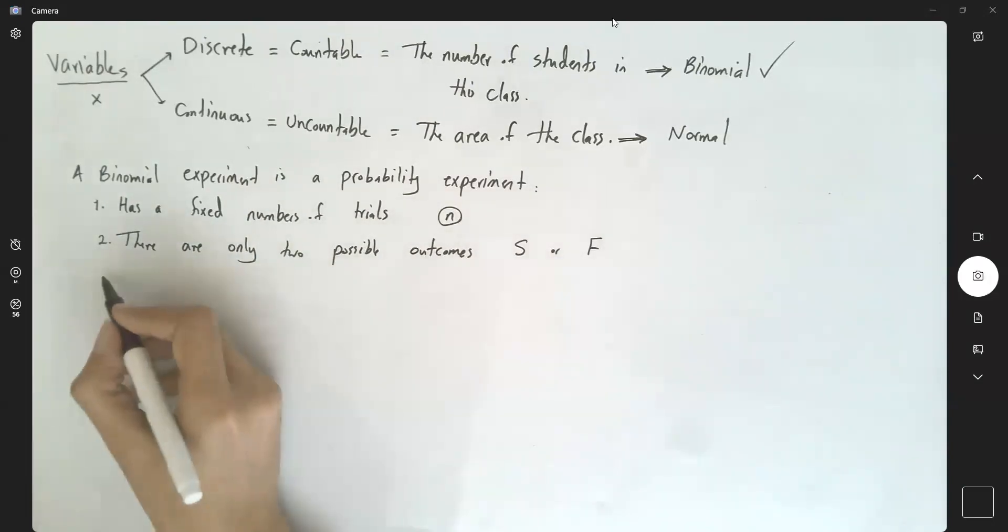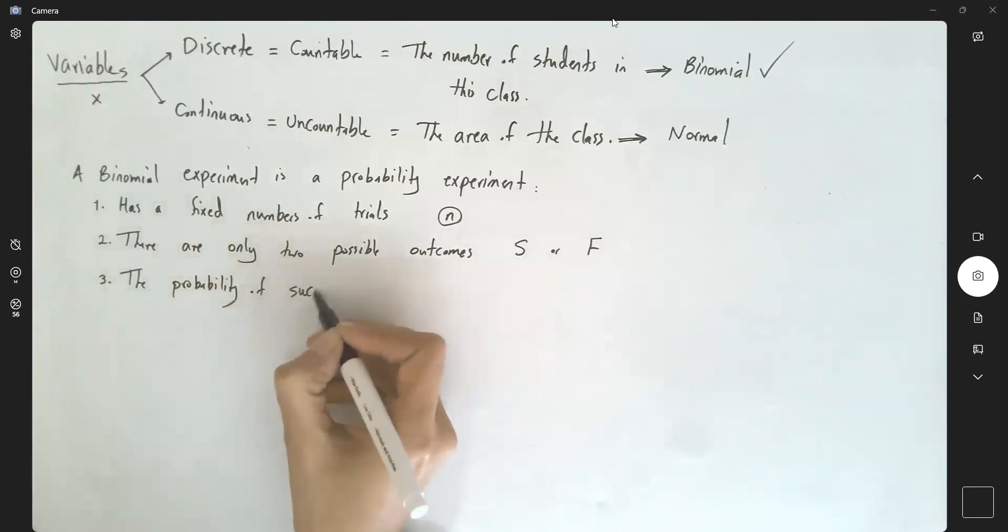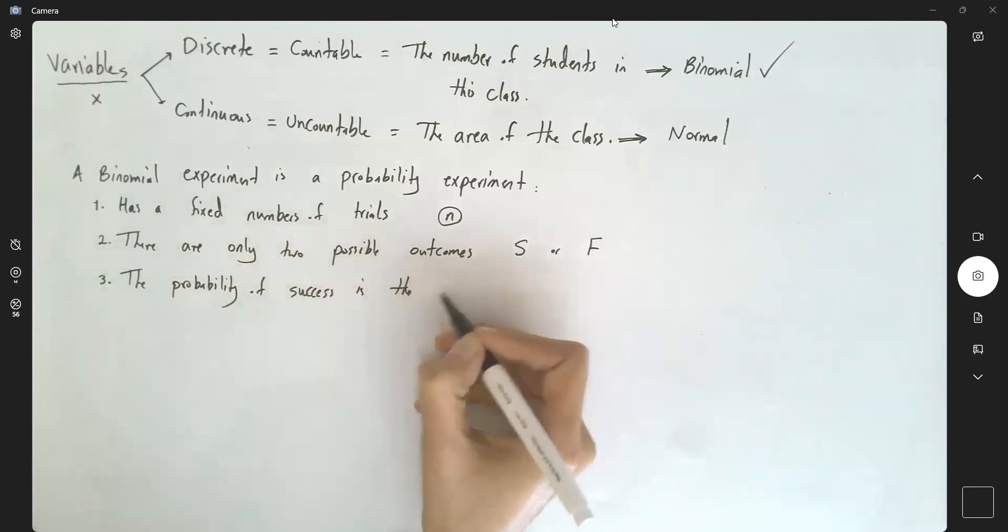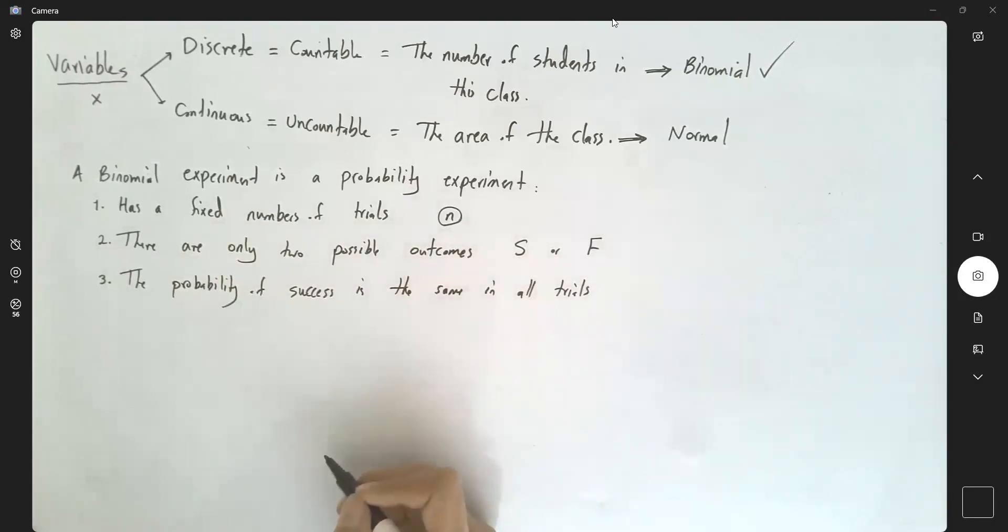Three, the probability of success is the same in all trials. And finally, the random variable x is a discrete random variable which counts the number of successes.